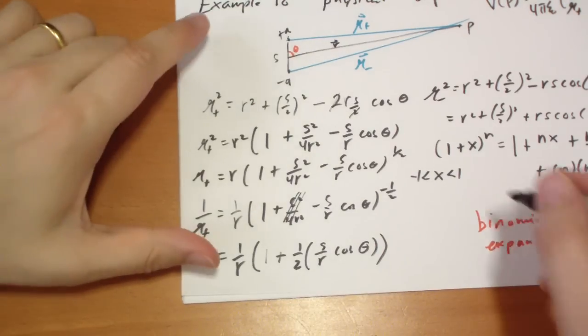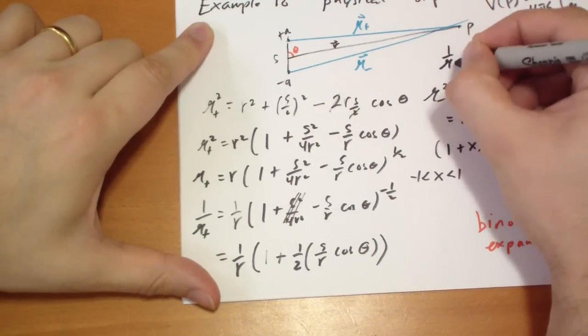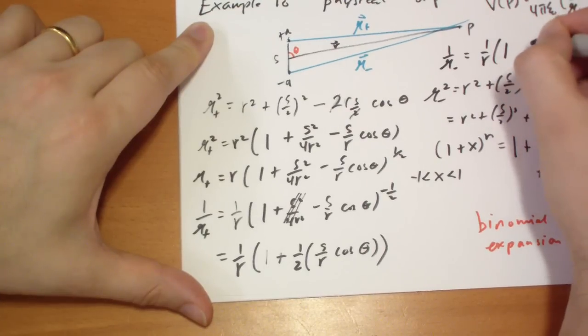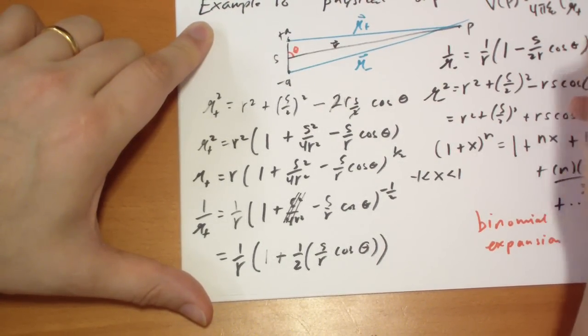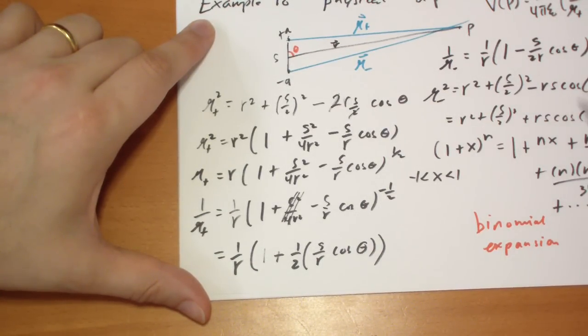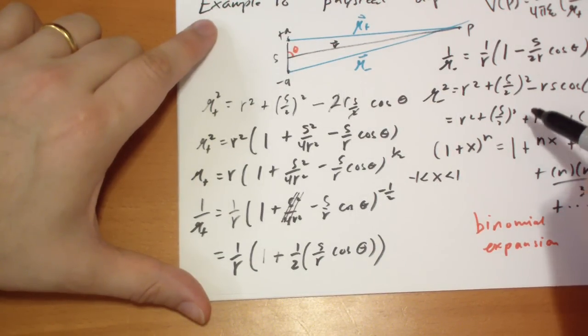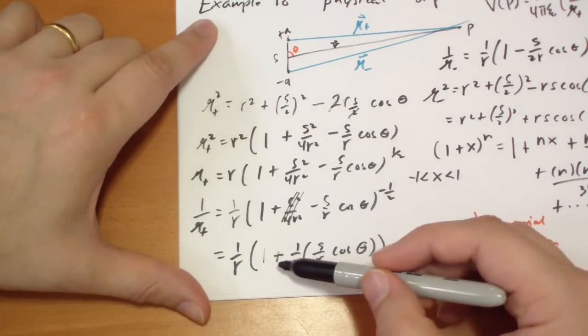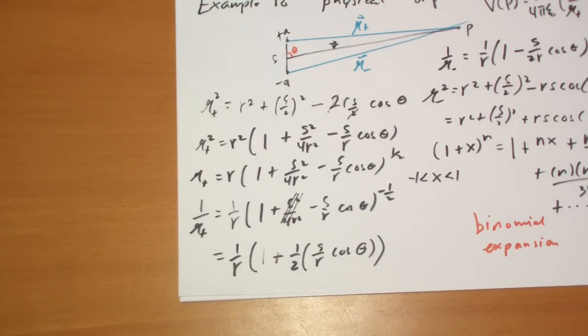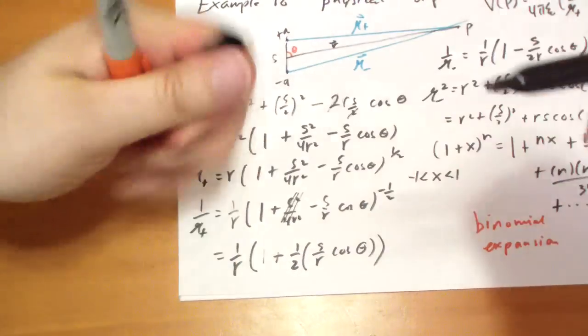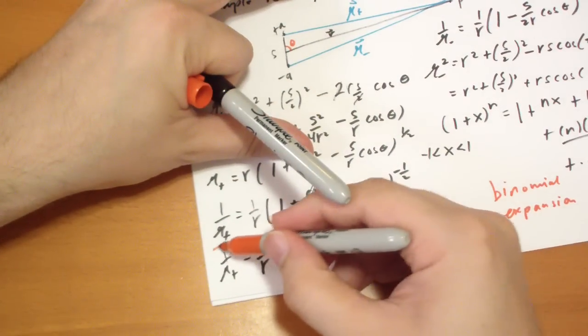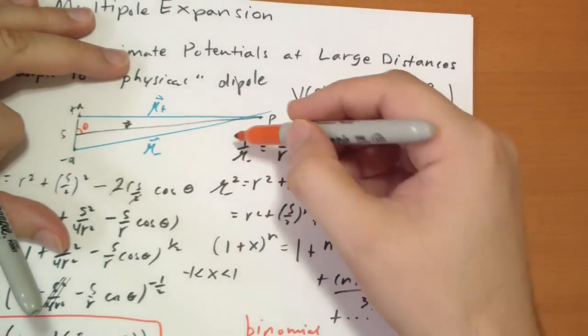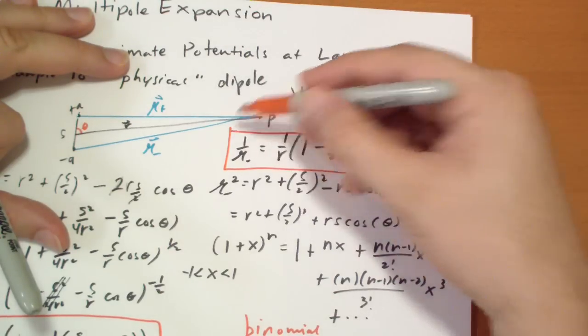For our R minus, and I ran out of room here, so 1 over R minus is equal to 1 over R, 1 minus S over 2 R cos theta. Minus because this is a plus sign, and we're going to have a negative 1 half, and so it's going to be negative a positive, which is negative. All right, let me draw some boxes around those guys. So, I'll tell you what it is first. 1 over R plus, curly R plus, is this. And 1 over R minus is that.